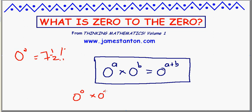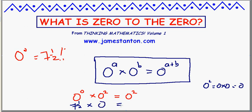According to this law, zero to the zero times zero squared should be zero squared — zero plus two. I claim zero to the zero is seven and a half, so I'll write seven and a half here, times something equals something. I do know what zero squared is: zero squared is zero times zero, which is zero. So the statement is really saying seven and a half times zero is in fact zero, which is actually very true — anything times zero is zero. Therefore, zero to the zero is indeed seven and a half. Voila.